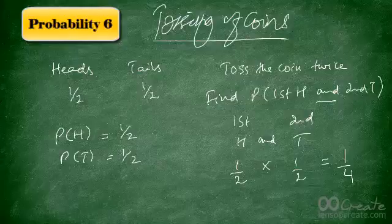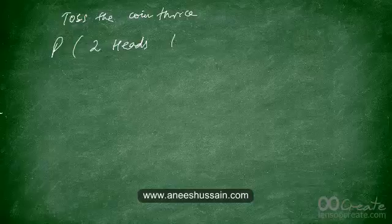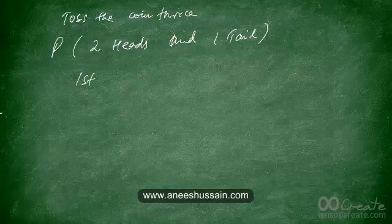Now let's say we're tossing the coin three times. The question says: find the probability that we get two heads and one tail. We can do this the long way by writing down all the possible ways this can happen.